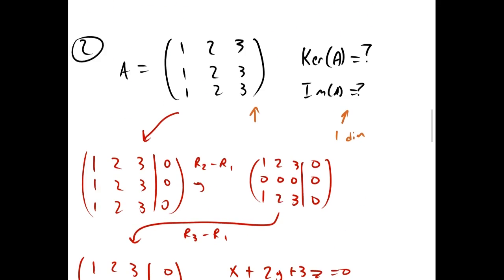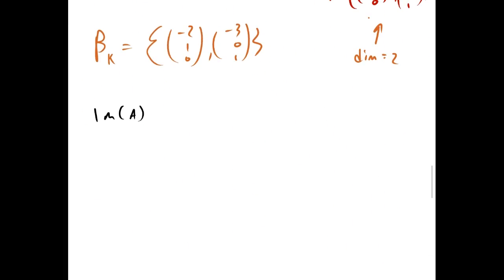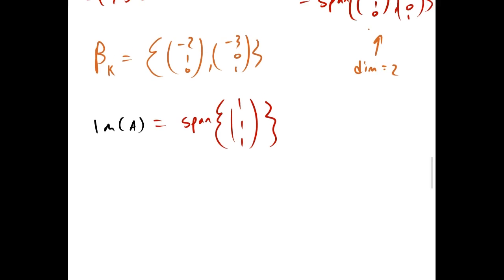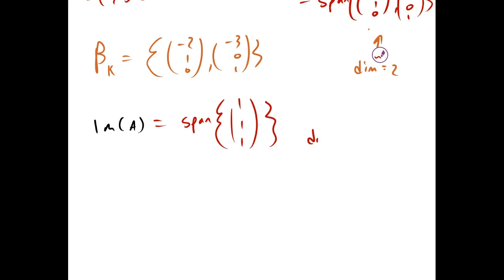So, now with this example, we see that we have three columns, and these two are just multiples of the first one. So, the image of A can just be written as the span of our first column vector, 1, 1, 1. We could have chosen 2, 2, 2, or 3, 3, 3. And it has dimension 1, as we predicted by the rank-nullity theorem.